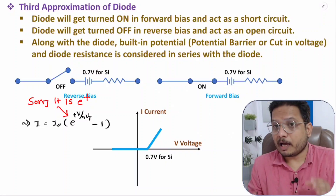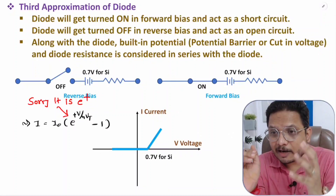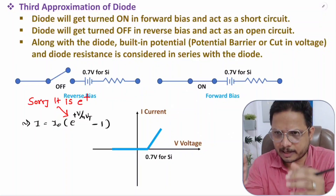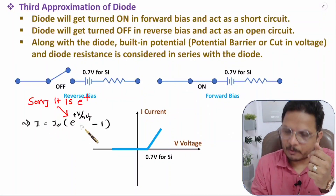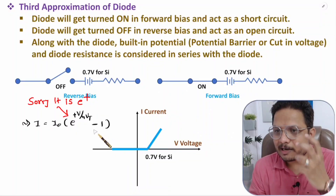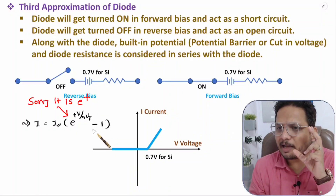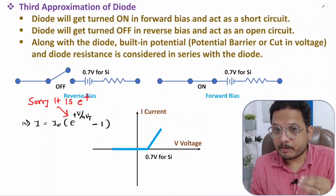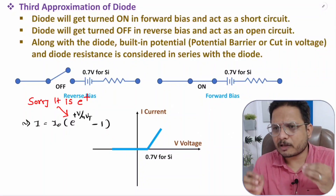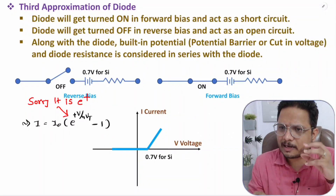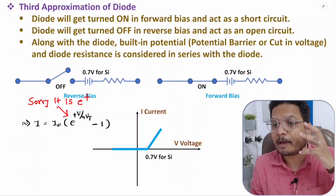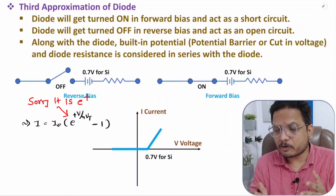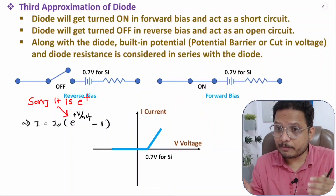In reverse bias, since the diode is off, zero current flows — but practically there will be current due to minority carriers, which is very small, in the range of microamperes or nanoamperes. These are the approximations being discussed. I hope you have understood how practical and ideal diode approximations work and how we use them to solve circuits, since using the full exponential formula every time in multi-element circuits would be very difficult.